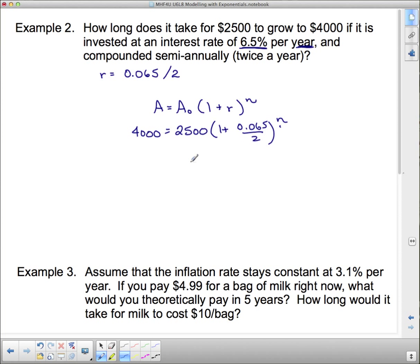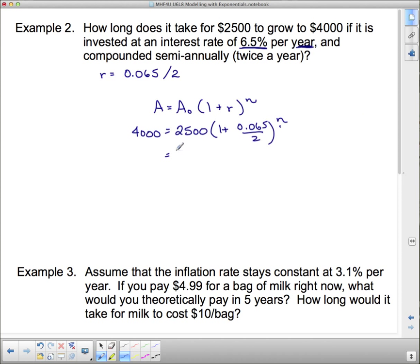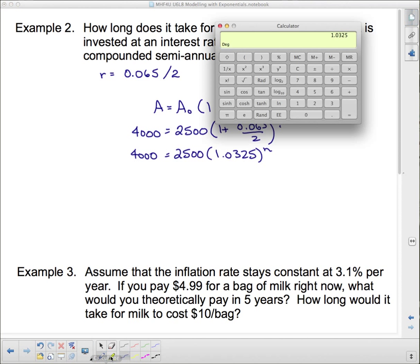I want to leave this on my calculator so that I get all of the digits. Now this one it's not so bad because 0.065 divided by 2 is actually not a big deal. So 0.065 divided by 2 plus 1 is what's in that thing - 1.0325. So let's get that in there right now: 1.0325 to the exponent n.